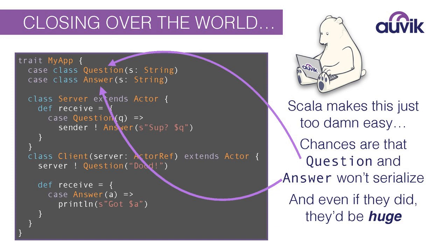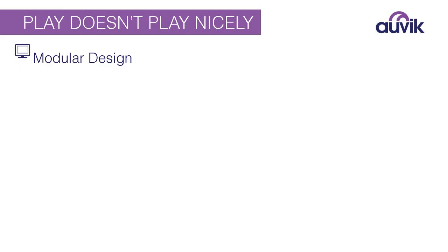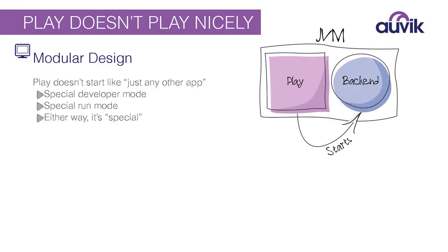We're collecting best practices as we go forward. One of the things we do is try to create a flat class hierarchy. There's really no reason to make inner classes for messages, so we don't. Play doesn't necessarily play nicely for us — the main problem is it just doesn't start like any other app. It has a special developer mode and a special run mode, which makes it special in either case.